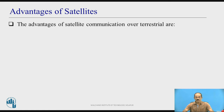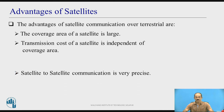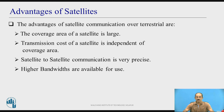The various advantages of satellite communication over terrestrial communication are: the coverage area of a satellite is large; the transmission cost of satellite is independent of coverage area — even if you want to increase the coverage area, the cost of the system will not increase, whereas in terrestrial communication we need to install more cables, which increases cost; satellite-to-satellite communication is very precise, allowing signals to be relayed from one satellite to another accurately; and higher bandwidths in the gigahertz range are available for use.